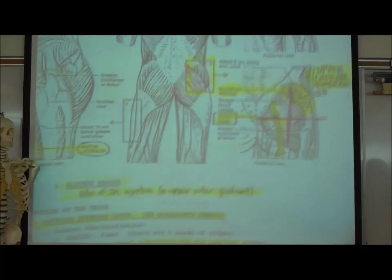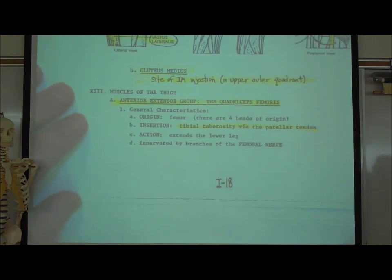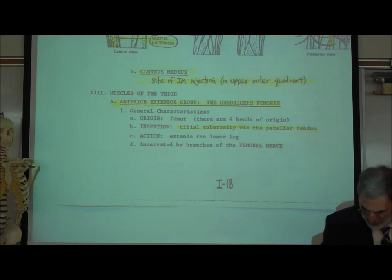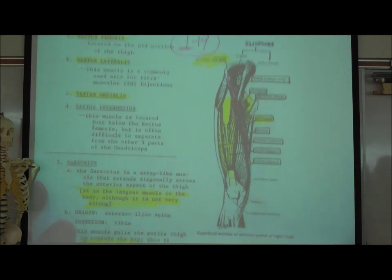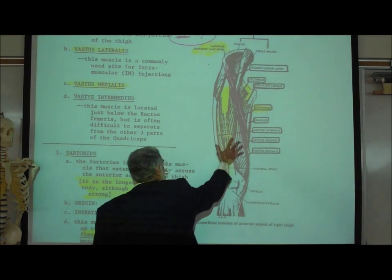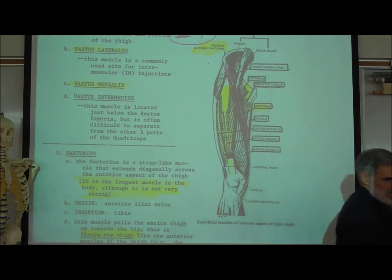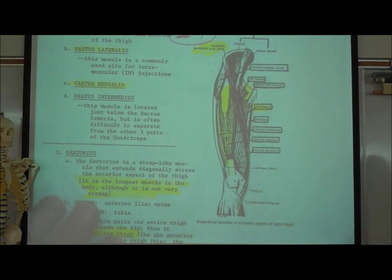On I-18, that takes us to anterior extensor muscles, the quadriceps. We have a picture of the quadriceps. On I-19, there is this huge muscle on the front of the thigh. It is called the quadriceps femoris.